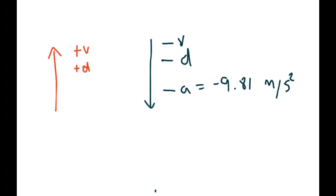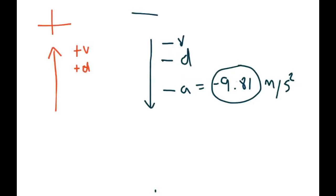A couple of key things to be careful of: if the object is moving upwards, think of that as positive. So if something is thrown upwards, that's a positive velocity, positive displacement. If it's going down, that's negative — negative velocity, negative displacement. And because acceleration always points downwards, we're always going to use negative 9.81. It doesn't matter if the object is moving up; the acceleration always pulls it down, so A will always be negative 9.81.